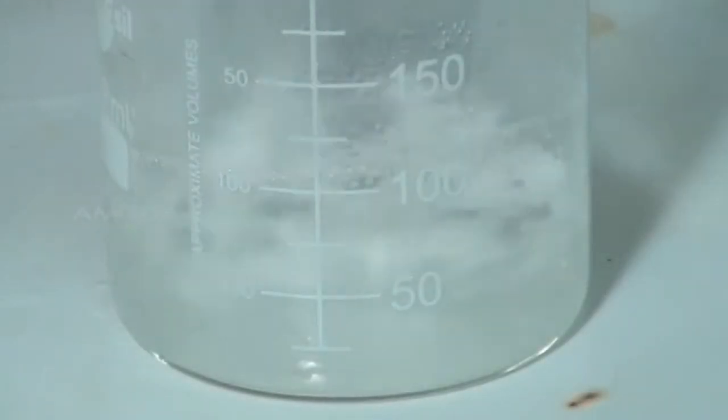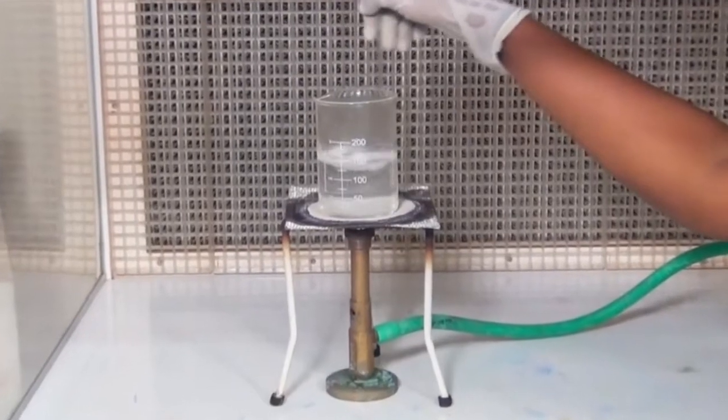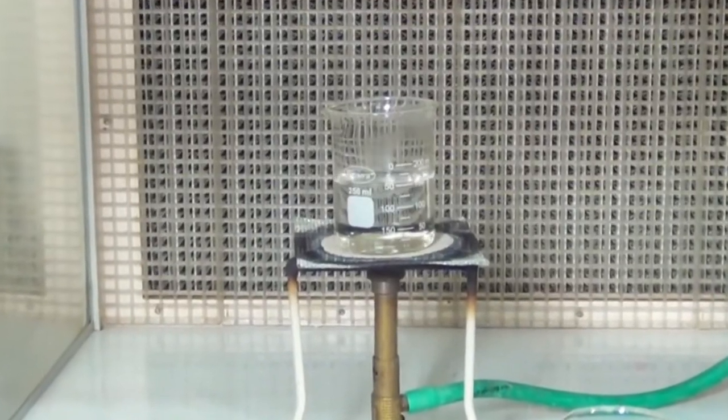Slowly pour the gum paste into the boiling water and with the help of a glass rod keep stirring it constantly. Once you have finished transferring the paste, allow it to boil for 10 minutes.